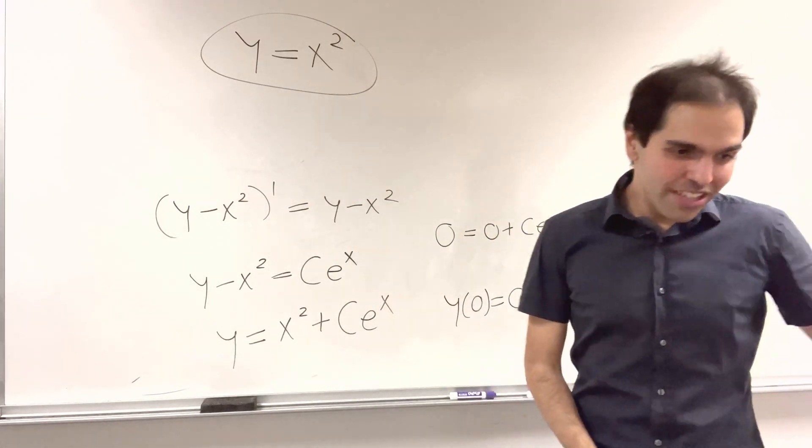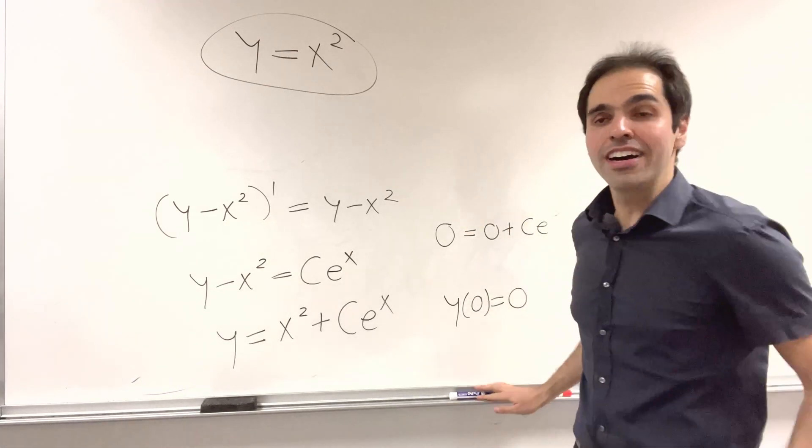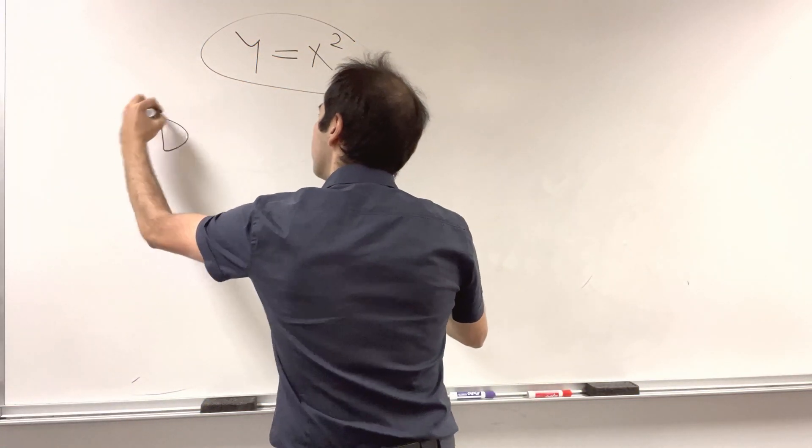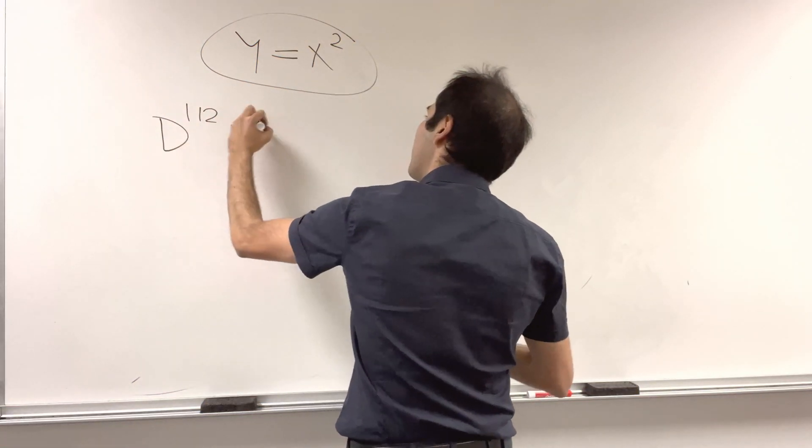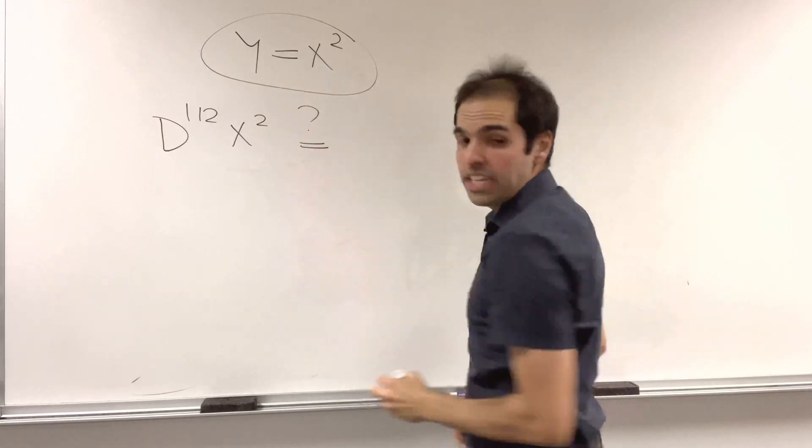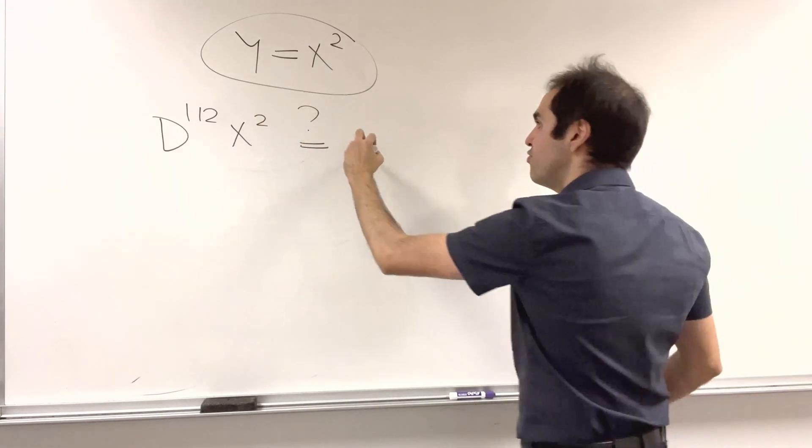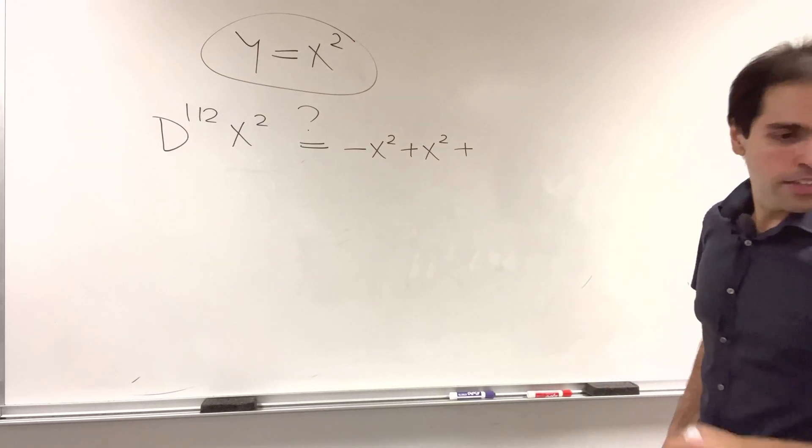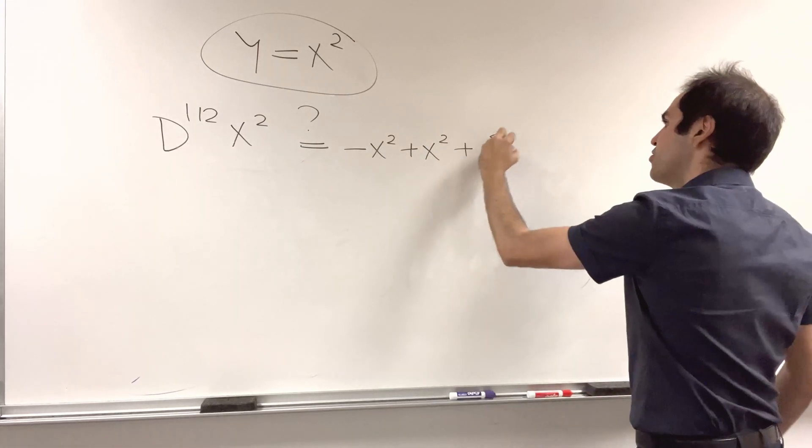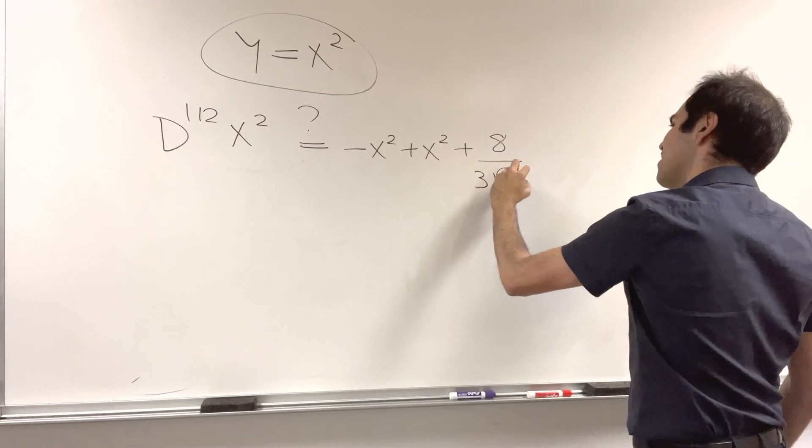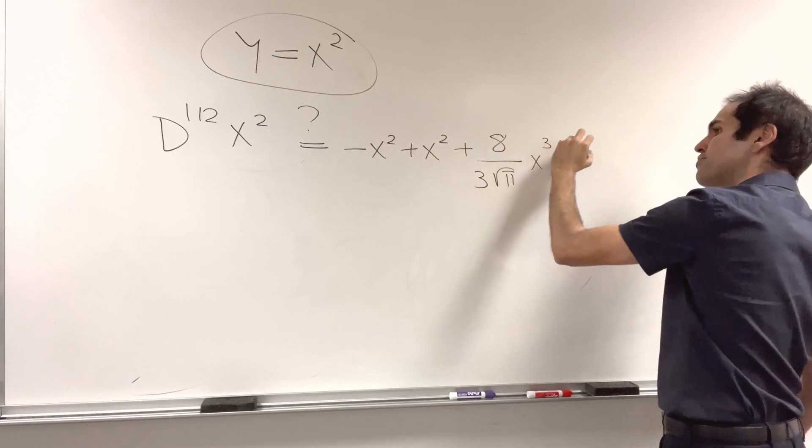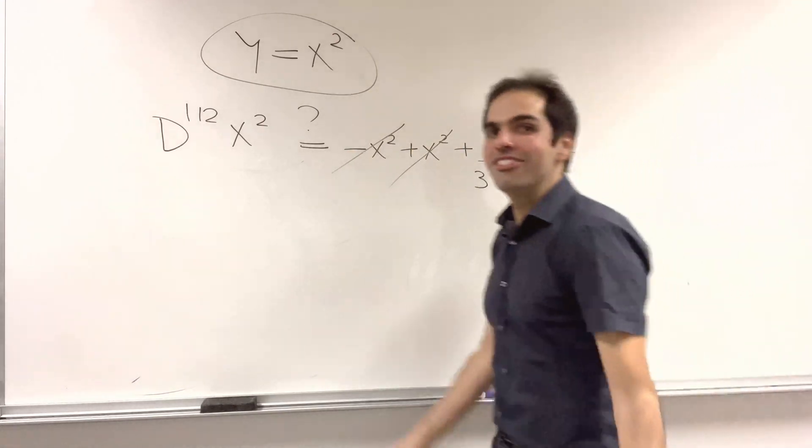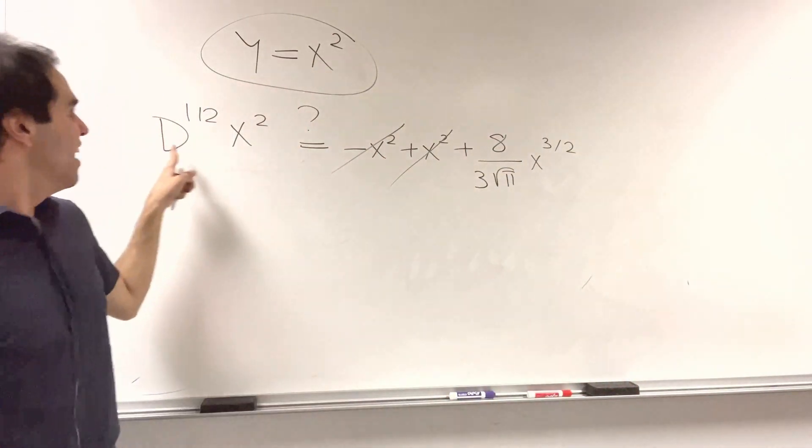And in case you're curious, let's actually verify that it solves the differential equation. So is it true that the half derivative of x² equals to minus the function, so minus x² plus x² plus 8 over 3√π, x to the 3/2?